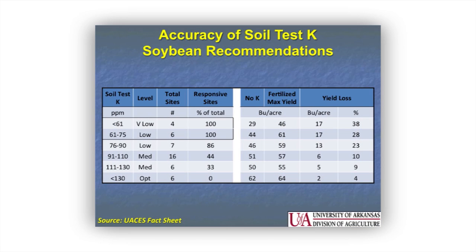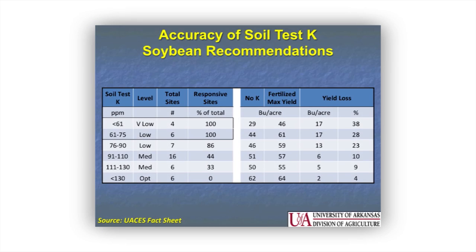What do these numbers look like on a highly developed, continuously updated soil test? This shows the total number of sites testing at each level: 100% of sites testing in the low range would respond to potash fertilization. In the higher portion of the low level there's a 23% yield loss, and in the medium level we're around 10% yield loss — but even there, sites are still highly responsive to fertilization. Relative yield decreases as soil test K decreases in the untreated control, so you don't want to get into a situation where you're not applying fertilizer.